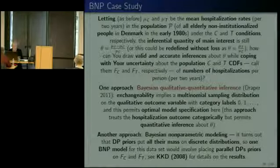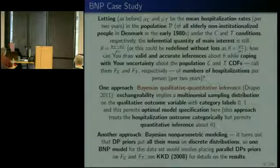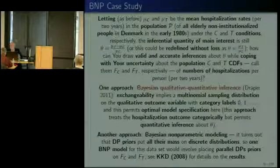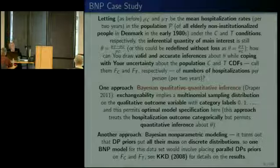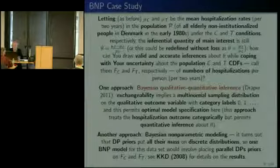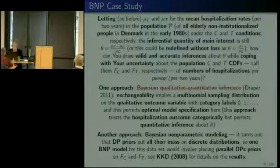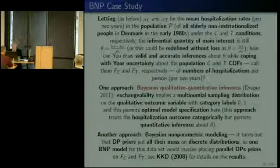In general for continuous modeling it sounds like the DP story isn't good, because every draw from a DP prior gives you a discrete distribution and yet you're trying to model something continuous. But we know what to do — whenever we have a way to do something that's discrete, we can take mixtures of discrete things and make them as close to continuous as you want. So what people really do is not DP modeling but DP mixture modeling, because the mixing process makes the result close to continuous.